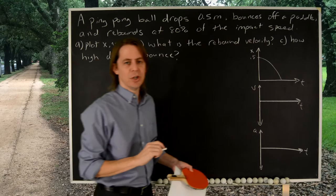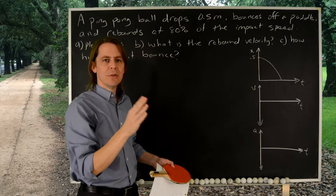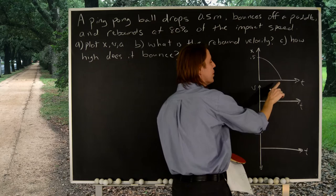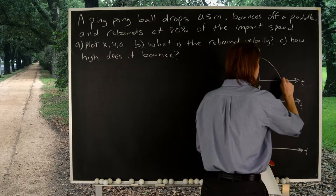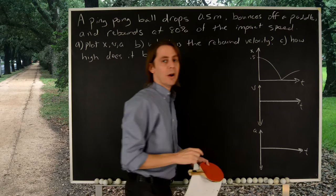On the rebound, we said that it's 80% of the impact speed. So the speed is the magnitude of the velocity, so it's the slope of that line. And we're saying it's going to come back up with a little less speed. So we'll have it bounce at a lower magnitude of the slope, kind of like that. And that would also lead us to think it's not going to bounce as high. So, that's the position.